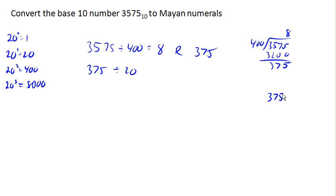So 375 divided by 20 is going to go in, let's see here, 1 is 17, and then I think that's 8 is 160, remainder 15. So is 18, remainder 15, and then 15 divided into 1s is 15.